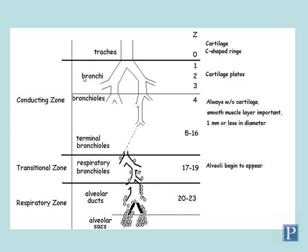This schematic shows the general structure of the trachea, which bifurcates to form a series of further bifurcating tubes called bronchi. Eventually bronchi become small enough in diameter that they're referred to as bronchioles. Bronchioles continue to bifurcate and subdivide until a point where they're known as terminal bronchioles, which marks the end of the conducting zone — air is conducted through these tubes but there is no gas exchange because the epithelium is too thick.